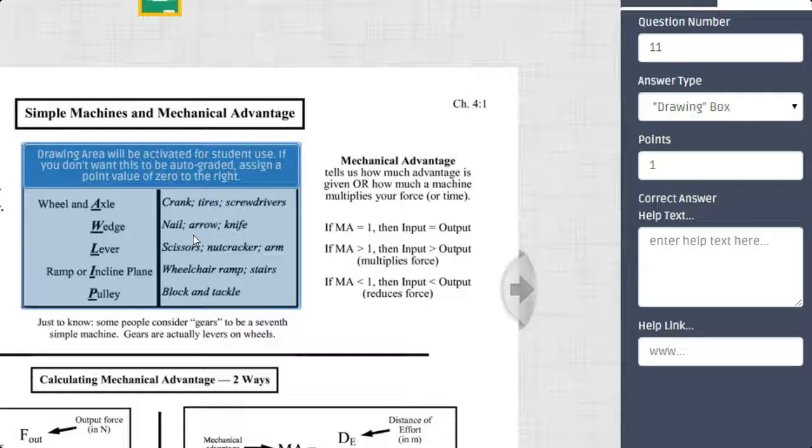Now, what it's going to do is it's going to automatically grade this drawing box as correct. So if you want them to be able to write on the paper and then not have it score it, then what you have to do is on the points, you have to put it to zero. So now it's going to grade it correct, but it doesn't really count any points, so it doesn't matter.